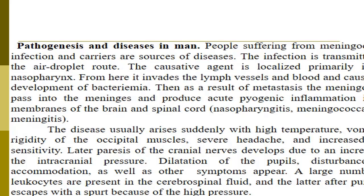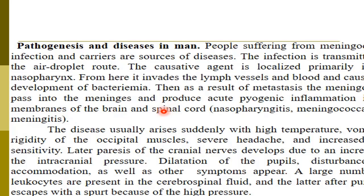In the section of pathogenesis and disease in man, people suffering from meningococcal infection and carriers are sources of disease. The infection is transmitted by the airborne droplet route, and the causative agent is localized primarily in the nasopharynx. From here it invades the lymph vessels and blood, causing bacteremia. Then, as a result of metastasis, the meningococcus bursts into the meninges and produces acute purulent inflammation in the membranes of the brain and spinal cord.